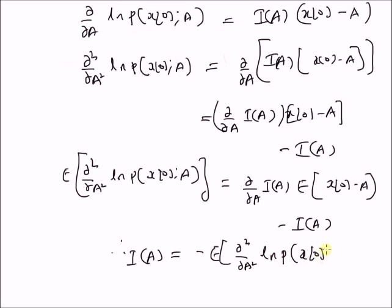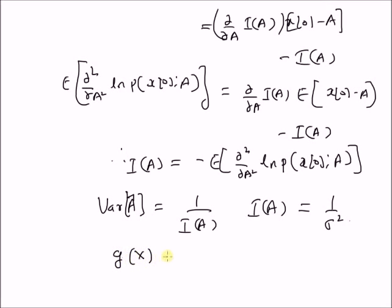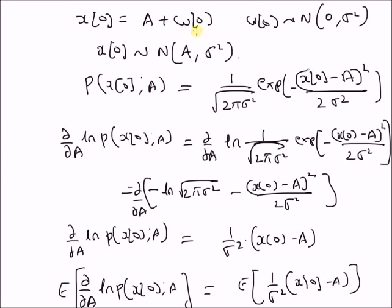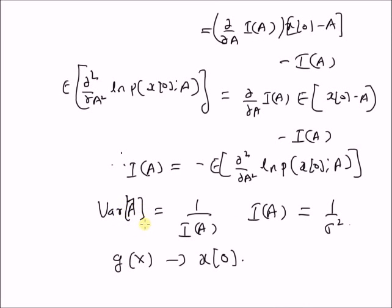Clearly, the variance of the estimator a-hat equals 1/I(a), where I(a) — also equal to the negative expectation of the second derivative of the log-likelihood — equals 1/sigma-squared. The function g(x) corresponds to x(0). Thus, in the case of a single observation with the model x(0) = a + w(0), the maximum likelihood estimator a-hat = x(0) is a minimum variance unbiased estimator, satisfies the Cramér-Rao bound theorem, and its variance equals 1/I(a).